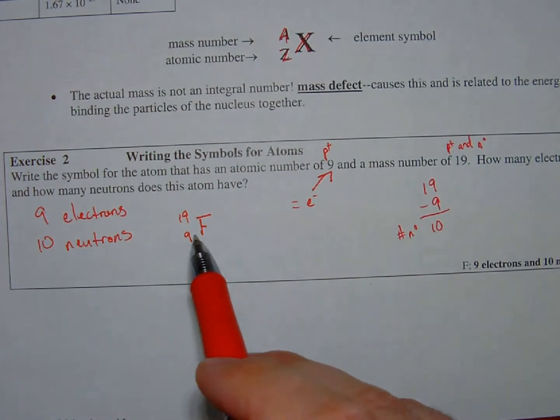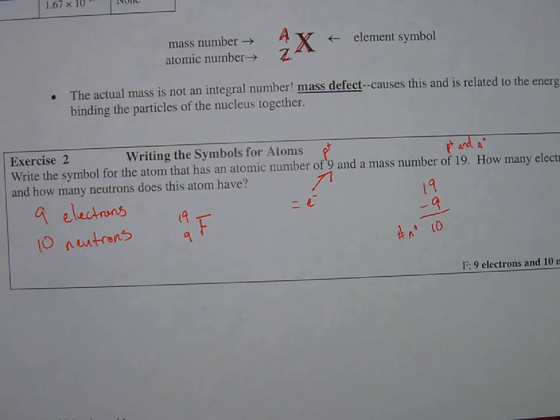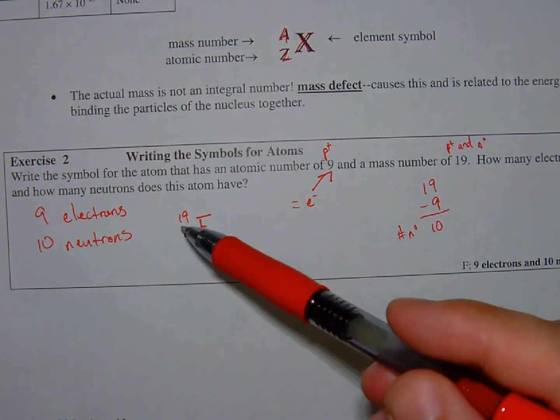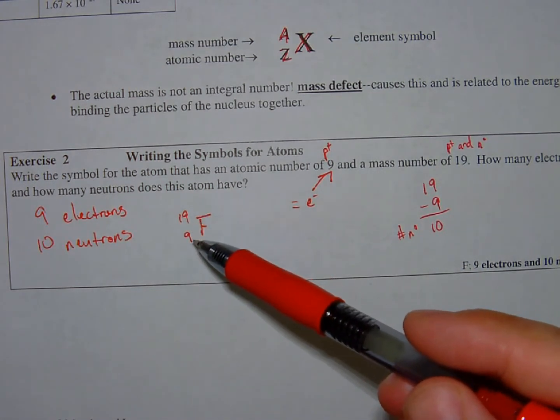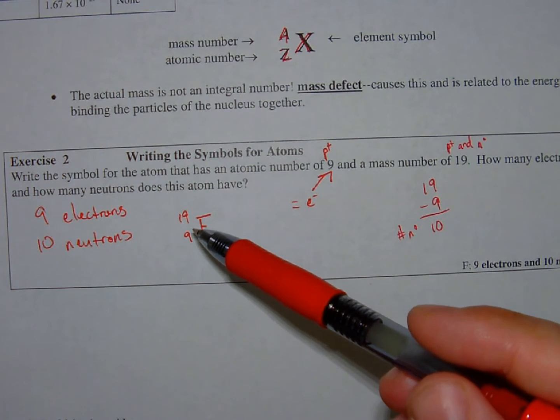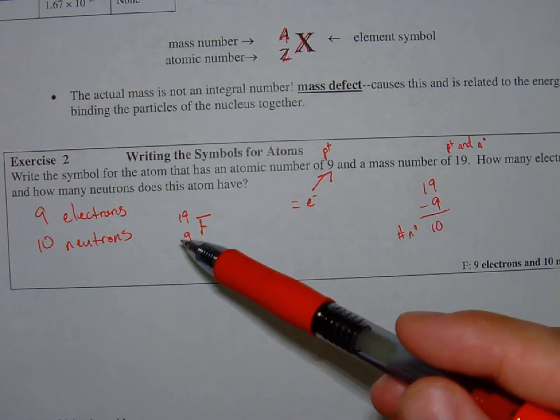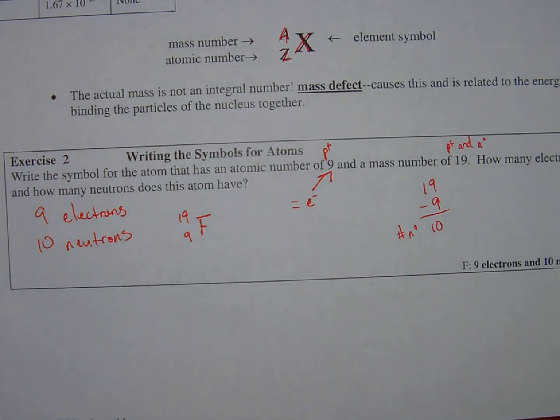If you find different notations of this, and you see these two numbers flipped, it's actually not that big of a deal, as long as you understand that the 19, even if it's written down here, is the number of protons and neutrons, and this nine is the number of protons. Even if they're switched, the atomic number is always going to be smaller than the mass number.